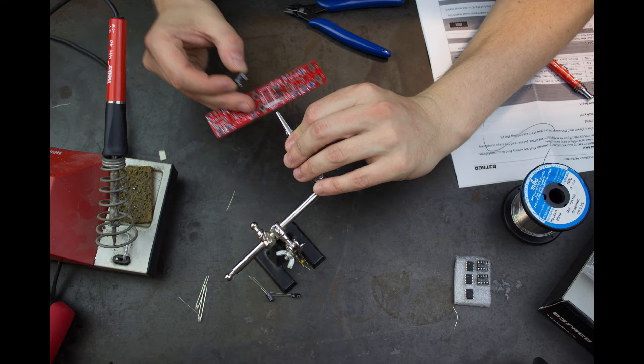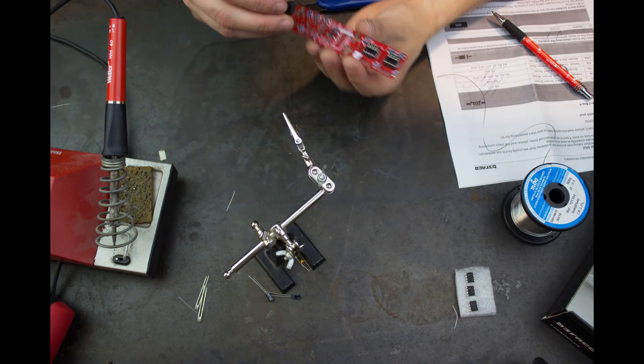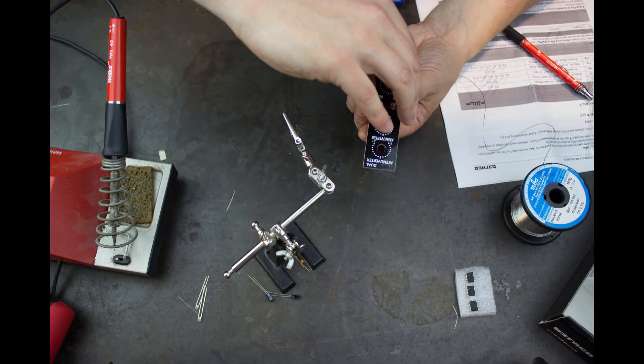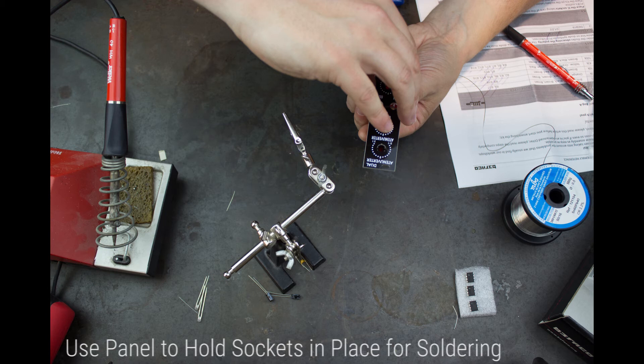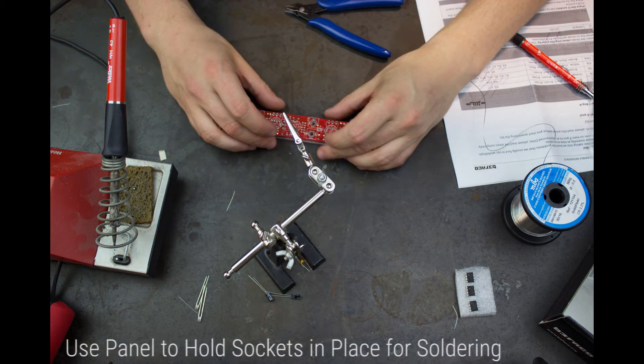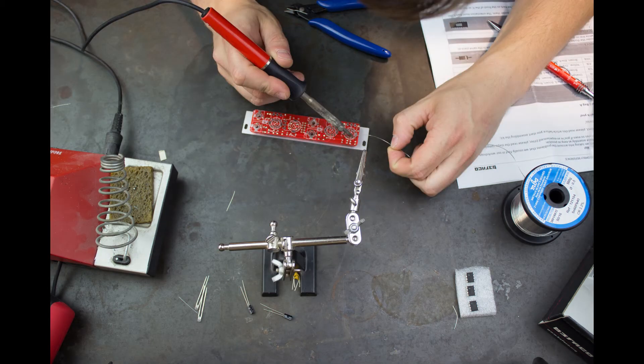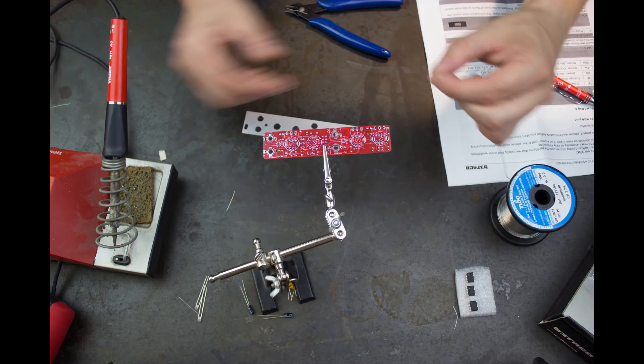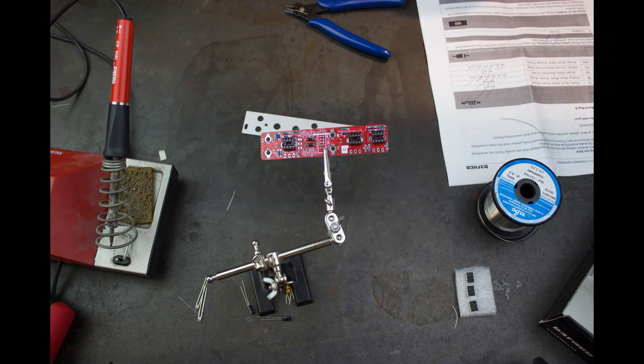A nice trick for making soldering sockets a little easier, and why I leave capacitors until next, is to place the sockets into the PCB, making sure to mind their orientation, then placing the panel over the top of them. We can then flip both the board and the panel over and lay them flat on the table. On the table, we can then solder one corner pin of each socket, which will hold them in place, and then we can return them to the helping hands to finish the soldering.